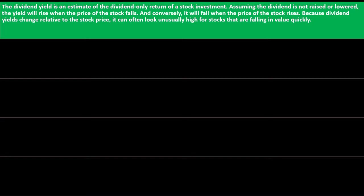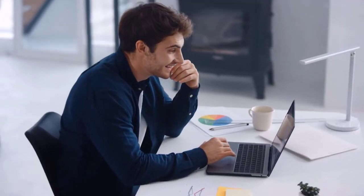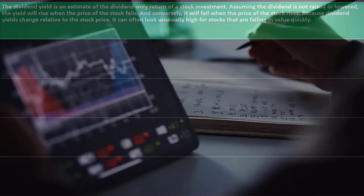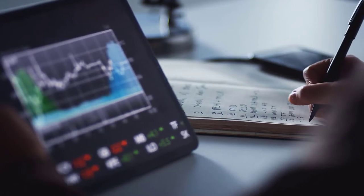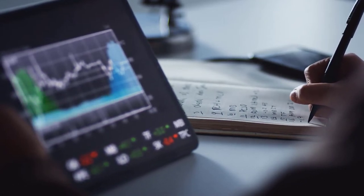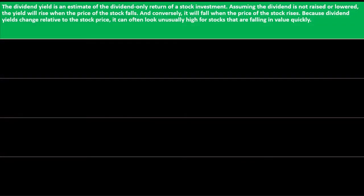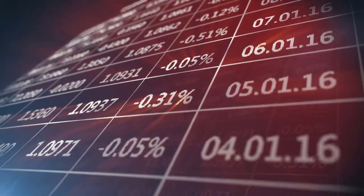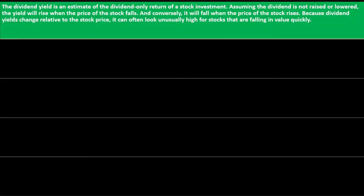Understanding the dividend yield: it is an estimate of the dividend-only return of a stock investment. Assuming the dividend is not raised or lowered, the yield will rise when the price of the stock falls — because dividends (the numerator) remain the same while the denominator falls. Conversely, it will fall when the price of the stock rises. Because dividend yields change relative to the stock price, they can often look unusually high for stocks that are falling in value quickly.